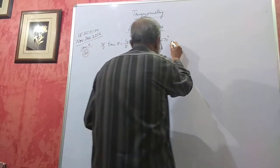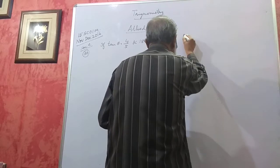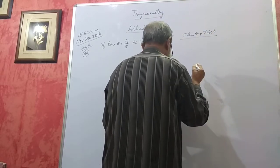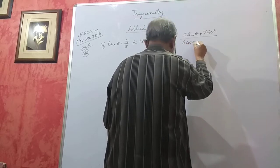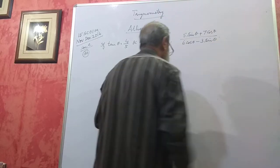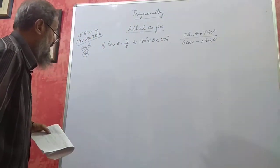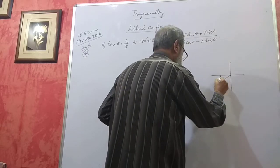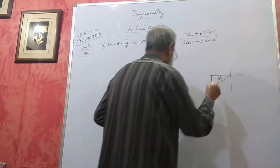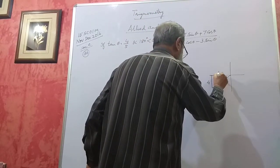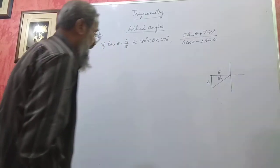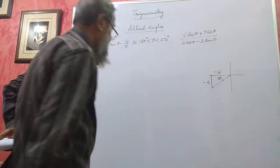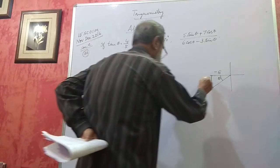Find the value of (5 sin θ + 7 cos θ) / (6 cos θ − 3 sin θ). Since tan θ = 4/5, draw a sketch in the third quadrant. Opposite is −4, adjacent is −5. Minus divided by minus becomes plus — that's how tan is positive in the third quadrant.